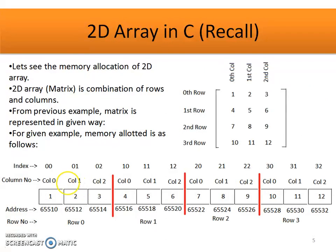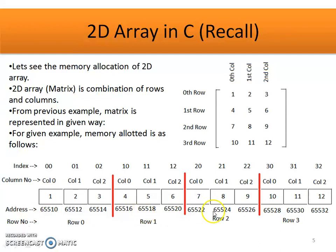How is this 2D array represented in memory? First, how the 2D array is represented in matrix form: there are 4 rows, 3 columns, and a total of 12 values. All 12 values are stored sequentially in memory using row-major order. In row-major representation, memory is allocated row after row — row 0 first, then row 1, then row 2, and the last row.